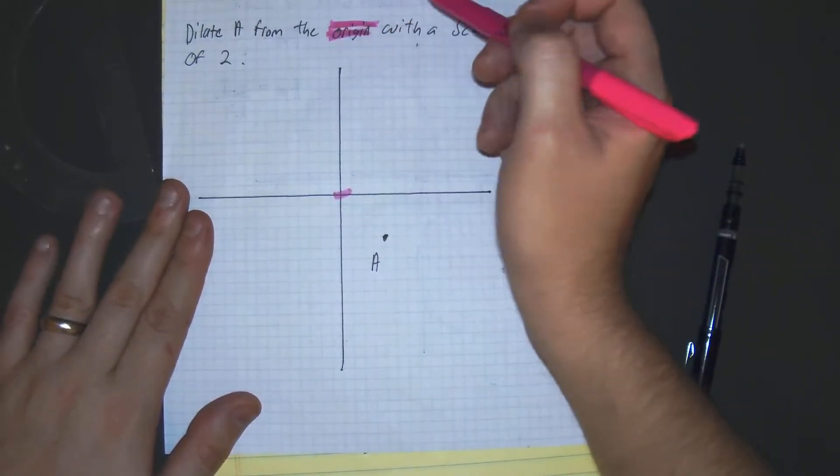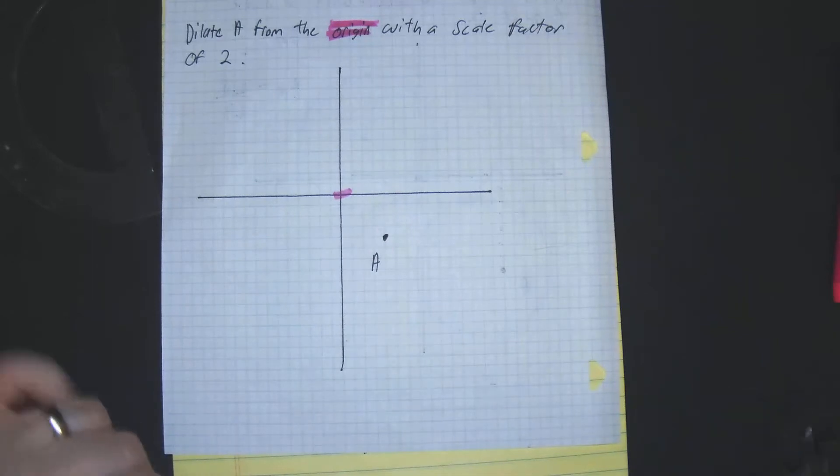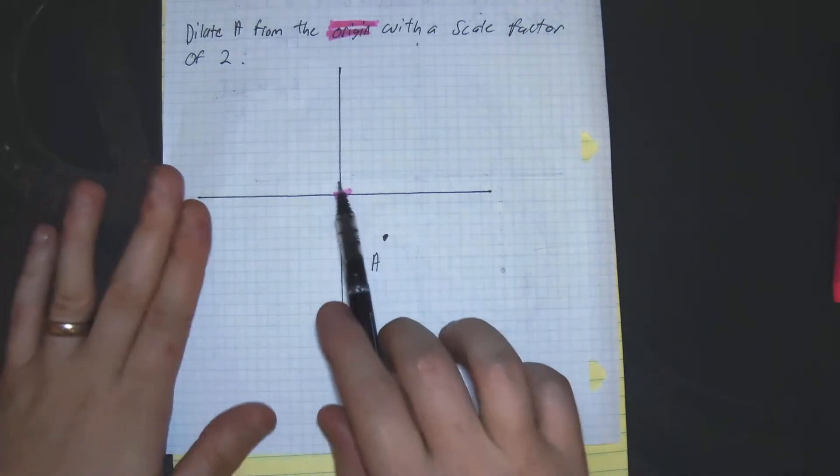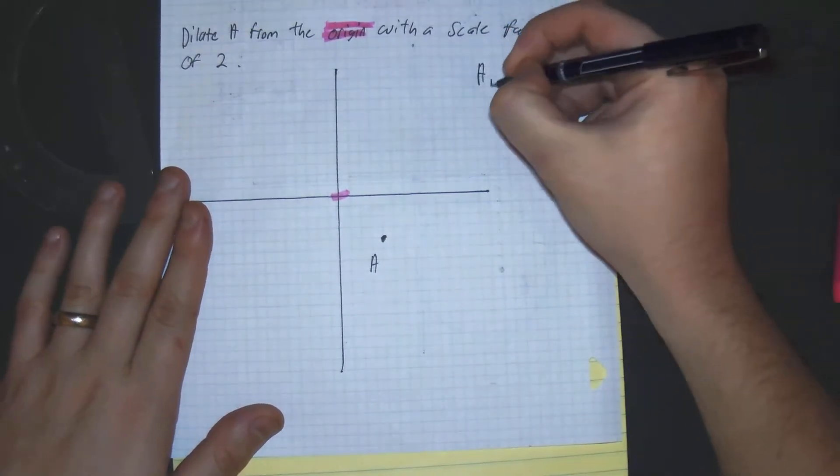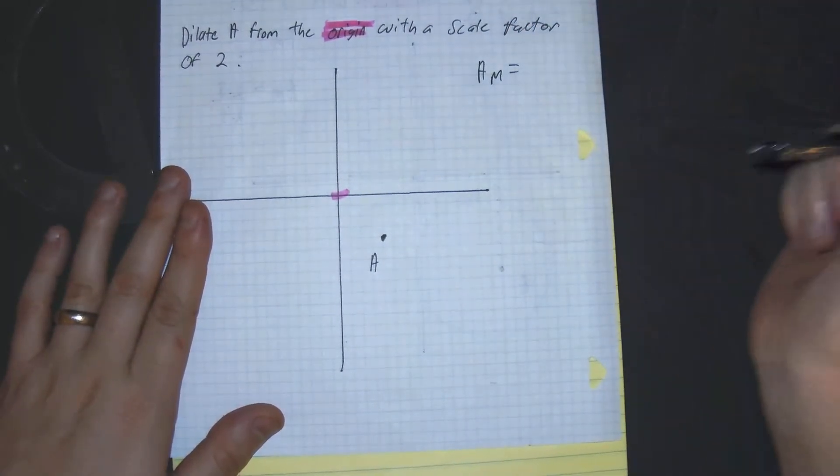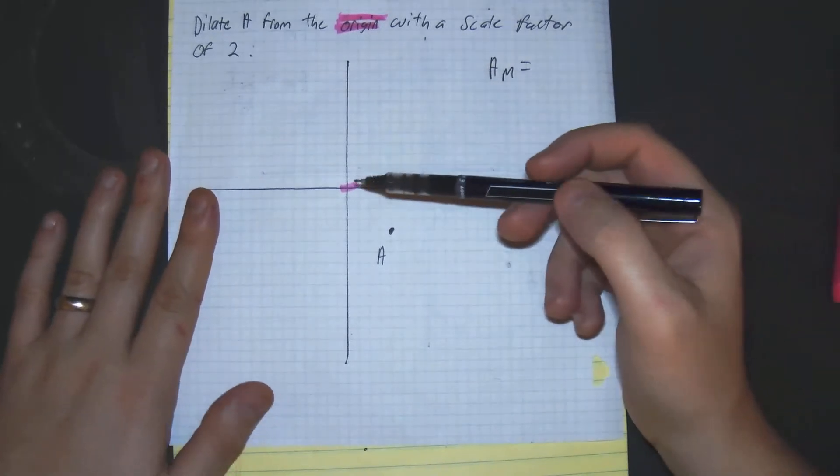Now that we have our origin, our point of dilation, the second part we need to work on is finding the slope between the point of dilation and our point. So the slope of A is equal to, first thing you would do is count vertical distance.